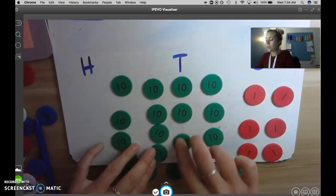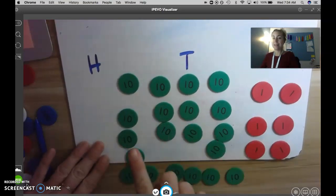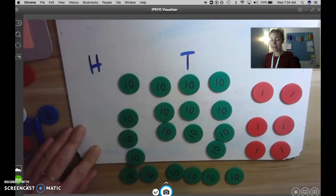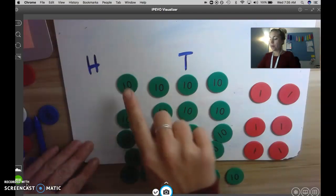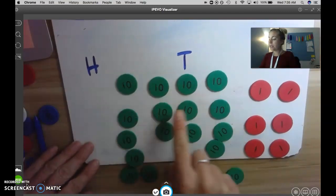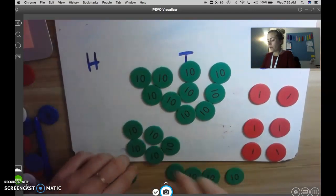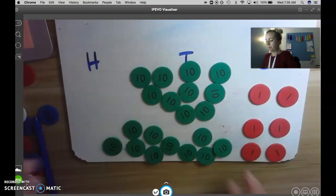So I should now have 200 in tens. So I should have 20 tens because I had 200 and 100 is the same as 10 tens. So 200 is the same as 20 tens. Let's just double check to make sure. 1, 2, 3, 4, 5, 6, 7, 8, 9, 10. This is 100. 1, 2, 3, 4, 5, 6, 7, 8, 9, 10. Perfect.